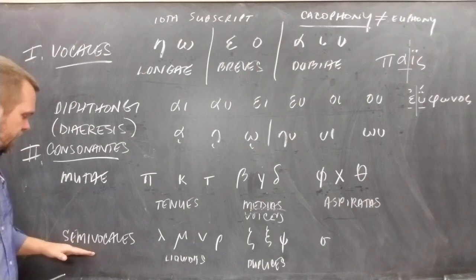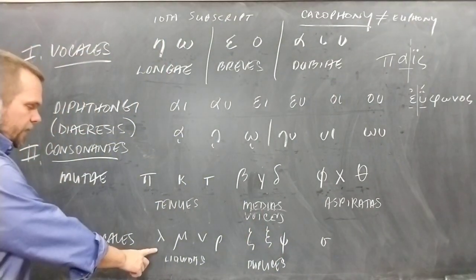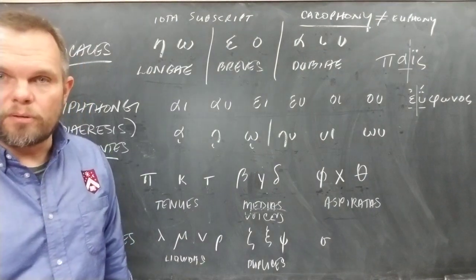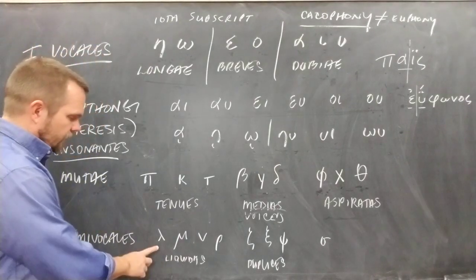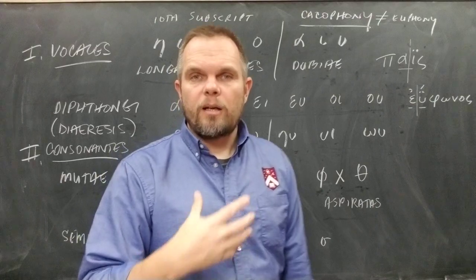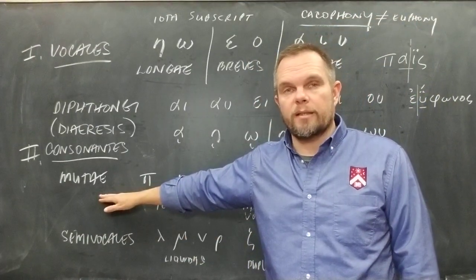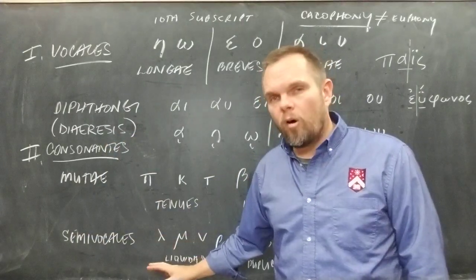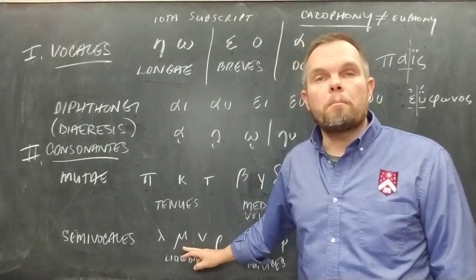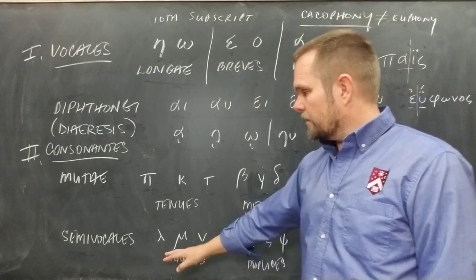The second division of consonants is semivocales — like half-vowels or almost vowels. We have four semivowels called liquids, also called immutables or unchangeables: lambda, mu, nu, and rho. These are the liquid semivocales because they can almost be articulated without a vowel — unlike the mutes, which cannot be articulated without being joined to a vowel. Lambda (L), mu (M), nu (N), and rho (R) are the liquids.